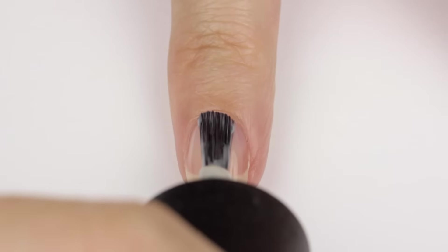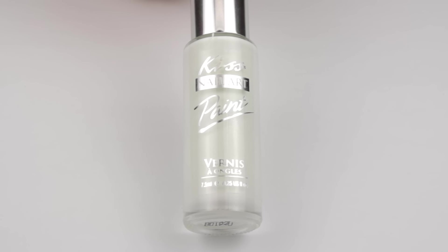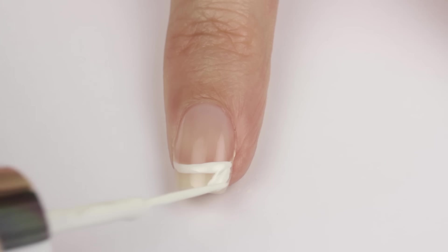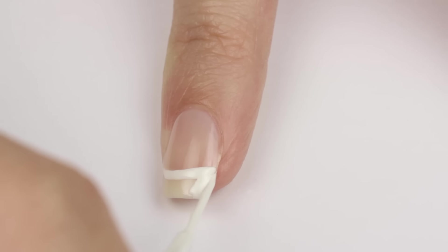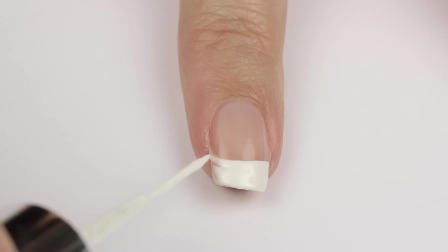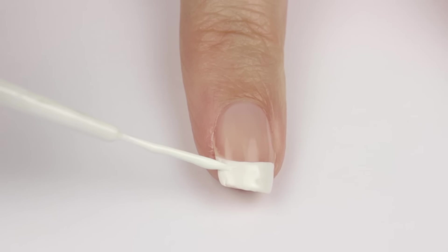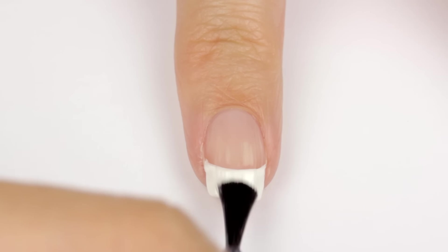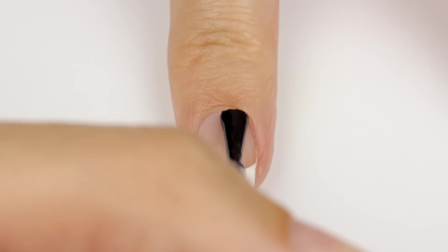To create this French manicure we're going to be using a white striper. Place the striping brush at the side of your nail and then rotate your finger to separate the pink from the white. Continue using the brush to fill in the rest of your white tip. Make sure to get the very sides of the nail and correct the smile line if you need to. Seal it all in with a fast drying top coat.